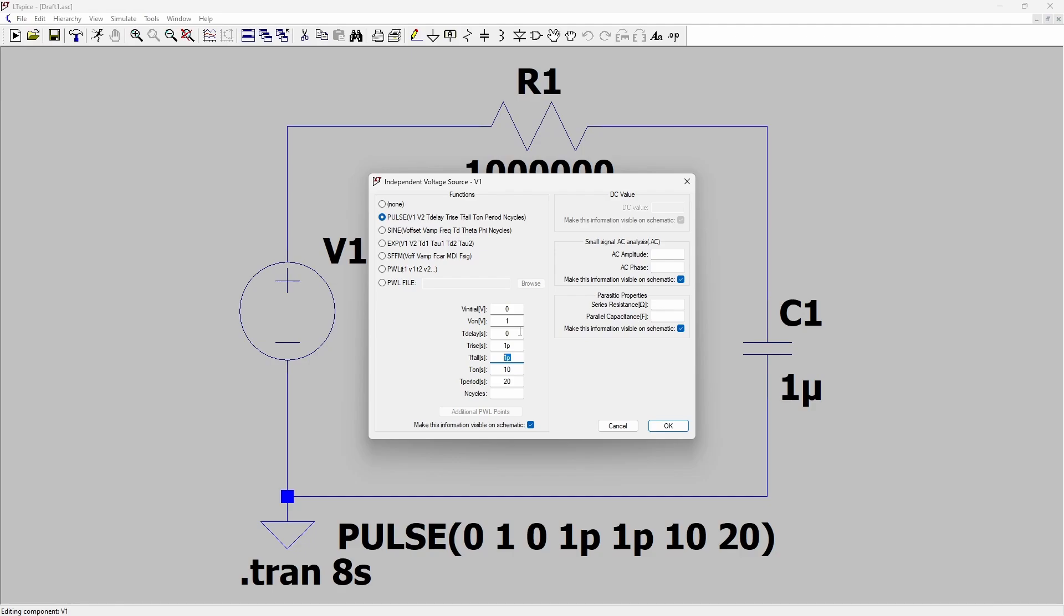And I have defined t on as 10 seconds which is the time the pulse will stay on, and the period of the pulse is 20 seconds, so the signal will be on for roughly 50% of the duty cycle.